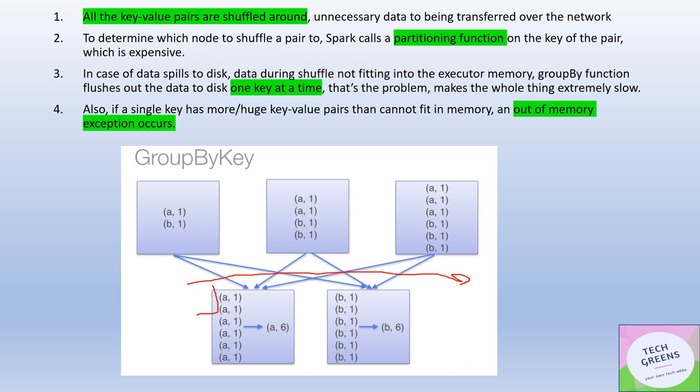Same goes for B. Whereas in the previous slide we have seen that in the ReduceBy, that number of tuples that are shuffled was comparatively less because that lambda function is already applied at the before the partitioning or before the shuffle has happened, before the repartitioning has happened.